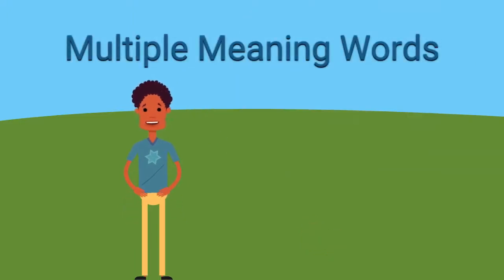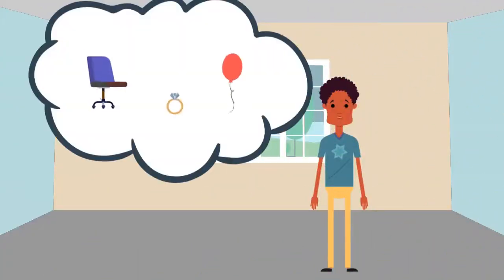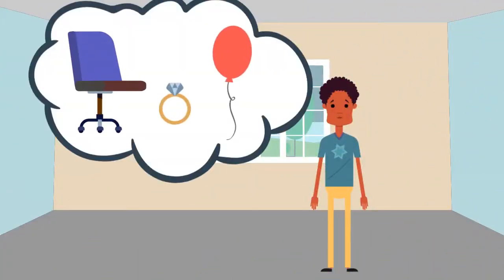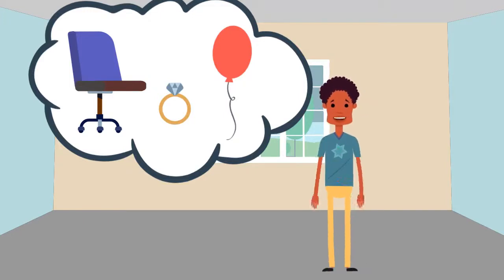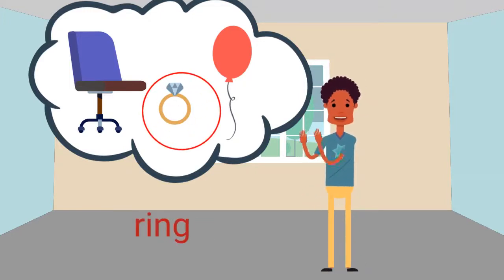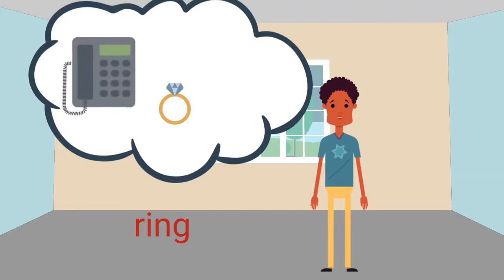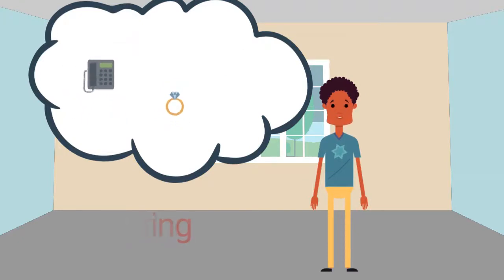Let's talk about another word with multiple meanings. Think about what a phone does when someone is calling. Which object is the same word as what a phone does when someone is calling? Right! A ring is an object and it also describes what a phone does when someone is calling. The word ring can mean more than one thing.